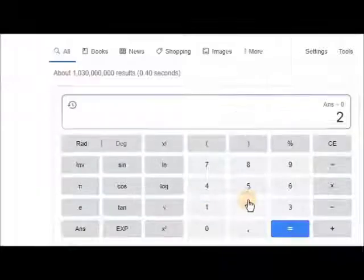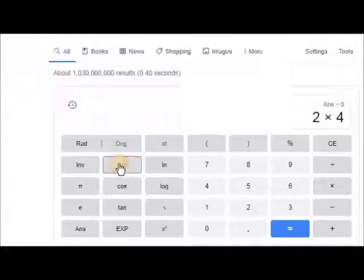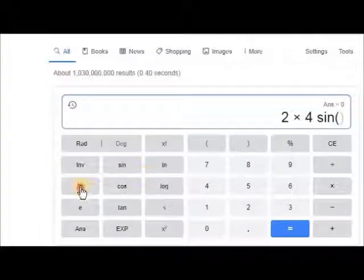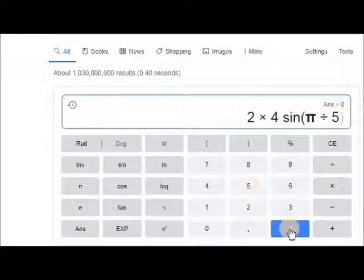Side length A will equal 2 times the radius, which is 4, times the sine of pi divided by 5, the number of sides.